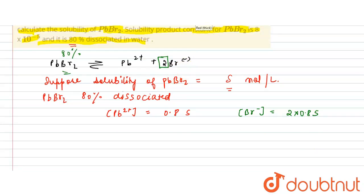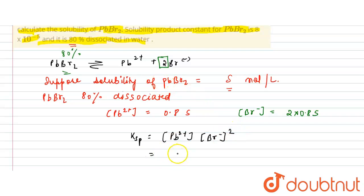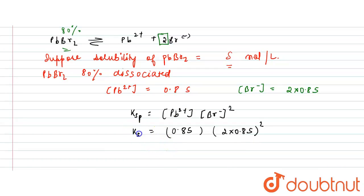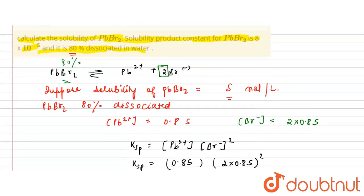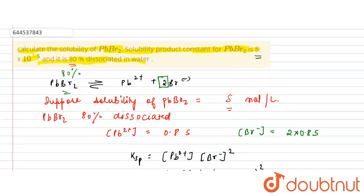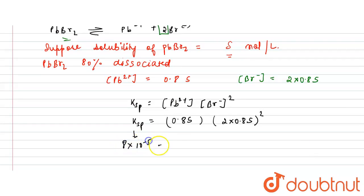Ksp is given by the product of the ions formed on dissociation: Ksp = [Pb²⁺] × [Br⁻]². Substituting, [Pb²⁺] = 0.8s and [Br⁻] = 2×0.8s. The value of Ksp is 8×10⁻⁵, so 8×10⁻⁵ = 0.8s × (2×0.8s)².